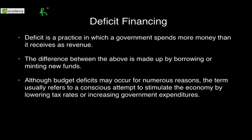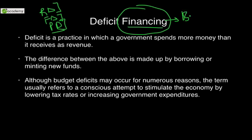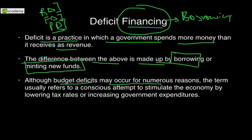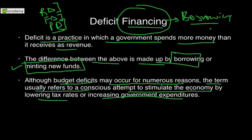If there is revenue deficit, fiscal deficit, or primary deficit, such deficits have to be financed. Borrowing from various sources such as RBI and domestic sources is one method. Deficit is a practice where a government spends more than it receives as revenue — the difference is made up by borrowing or minting new funds. Budget deficits may occur for numerous reasons, but the term usually refers to a conscious attempt to stimulate the economy by lowering tax rates or increasing government expenditures. Any kind of deficit can be overcome by making new funds available, resulting in deficit financing.